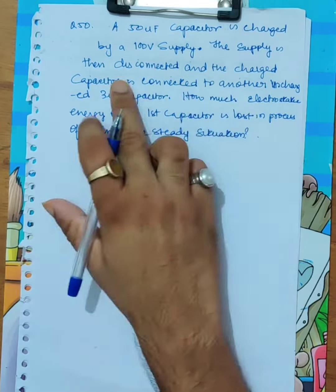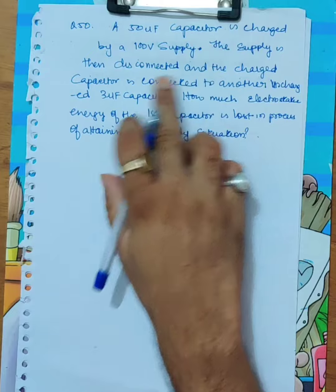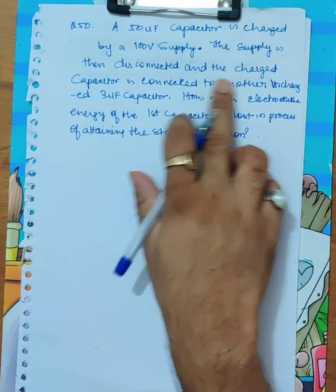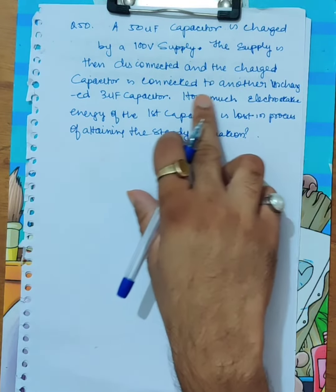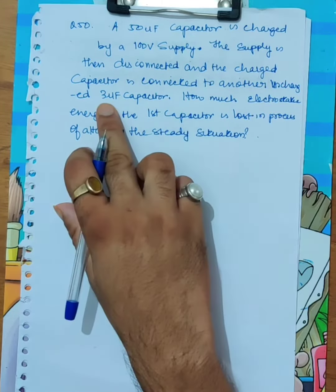A 50 microfarad capacitor is charged by a 100 volt supply. The supply is then discontinued and disconnected, and the charged capacitor is connected to another uncharged 3 microfarad capacitor.